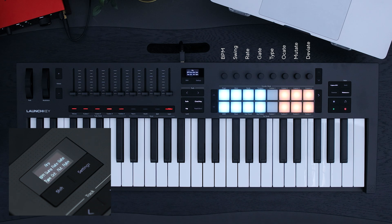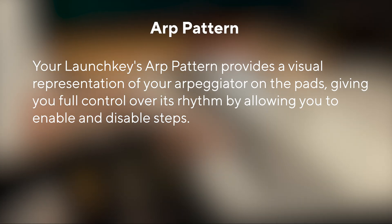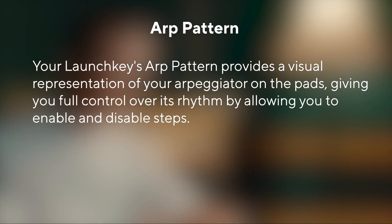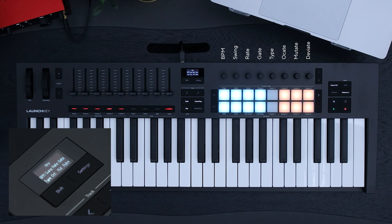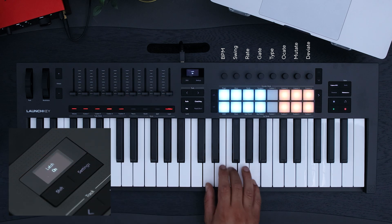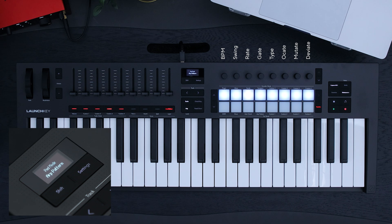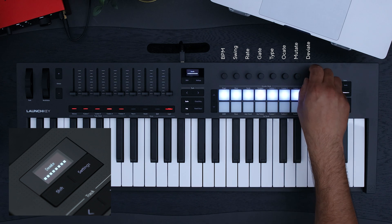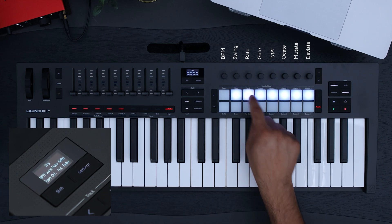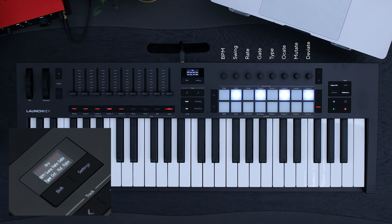To turn your latched notes off, hold Shift and then ARP. Your Launch Key's ARP pattern provides a visual representation of your arpeggiator on the pads, giving you full control over its rhythm by allowing you to enable and disable steps. Let's turn latch back on by holding Shift and play some notes. To activate ARP pattern, press Shift and ARP pattern. In this pad view, you have more control over your rhythm. Your pads will show the rhythm cycling through. As I start to press pads, you'll hear rests being added in the middle of your ARP pattern. And when I press them again, they come back.